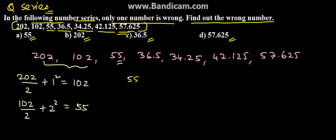Now if we divide 55 by 2 and plus if we take 3 square, then we will get 36.5. That means this is how the series is going.